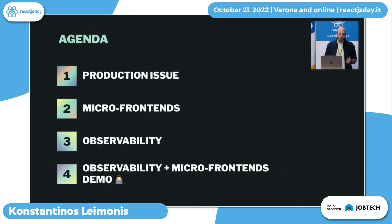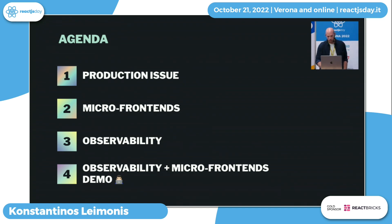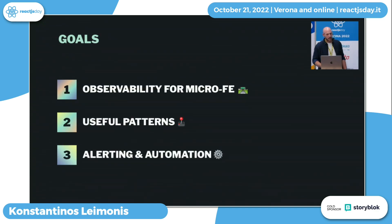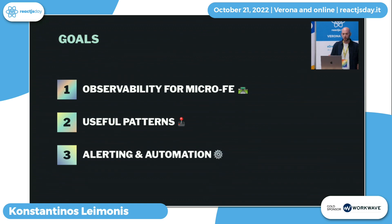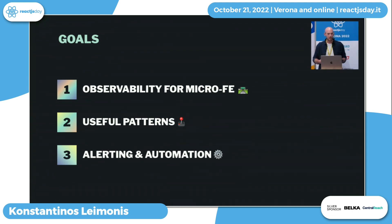A quick agenda for today: we're going to talk about a production issue, talk a bit about what microfrontends are, observability, and finally we're going to see a demo of how we can apply those two in a real-world kind of case. The goals of this talk: we're going to define what observability is for microfrontends, see some useful patterns, and learn how we can start getting alerted and automate this process.